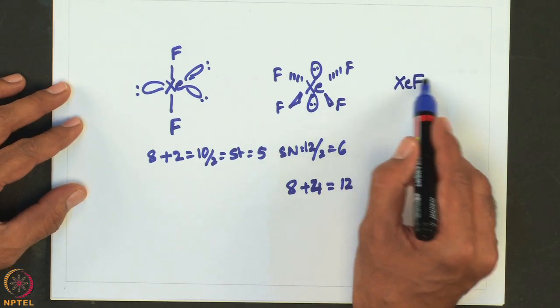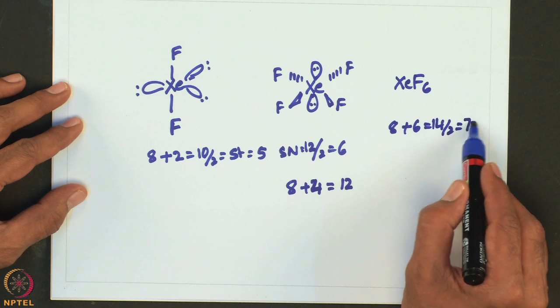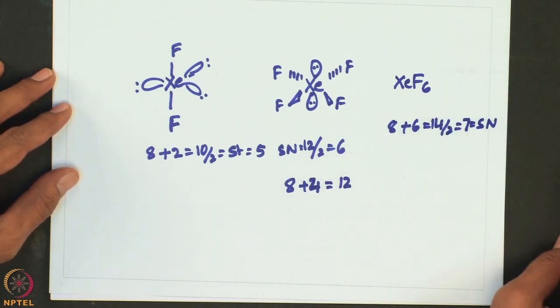For XeF6: 8 + 6 = 14 electrons; steric number = 14/2 = 7, with 1 lone pair. This lone pair occupies one of the triangular faces of the octahedron, making it essentially a capped octahedral geometry. However, since the lone pair is in a spherically inactive s orbital, XeF6 appears as a slightly distorted octahedral molecule. XeF6 is fluxional in the gas phase, interchanging between structures where the lone pair points through the center of an F3 triangle.